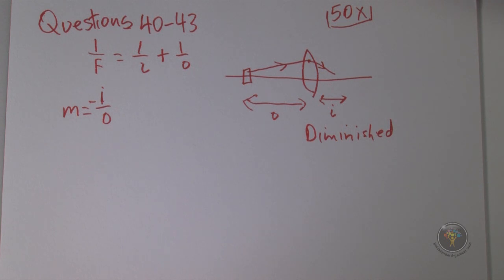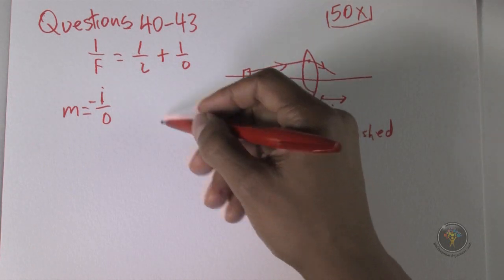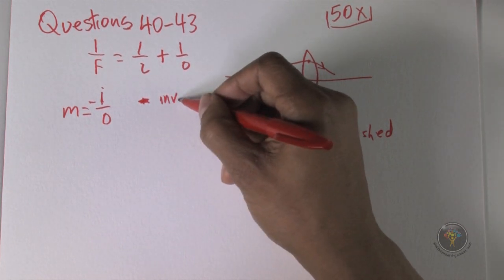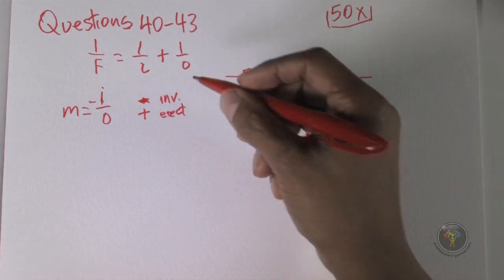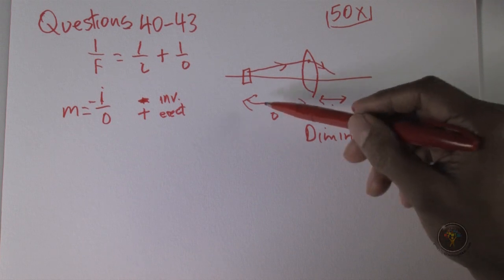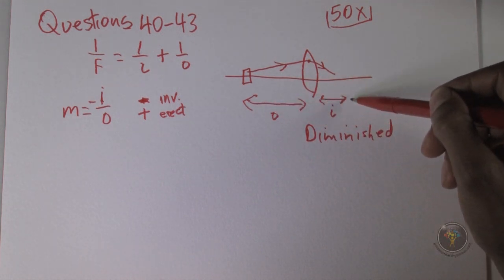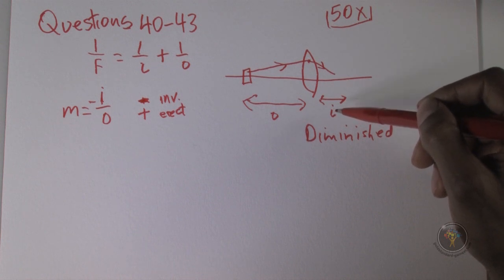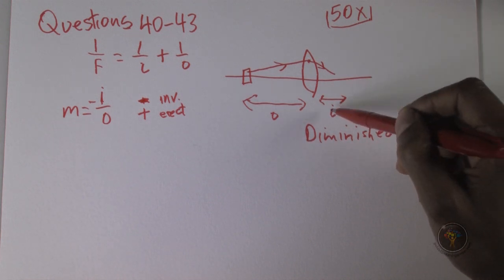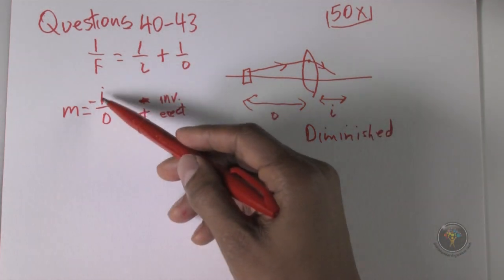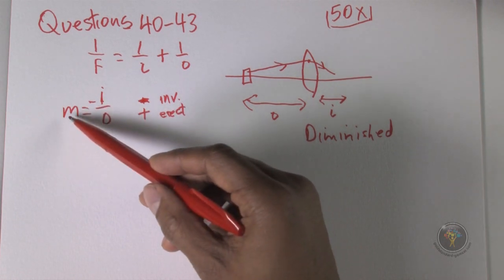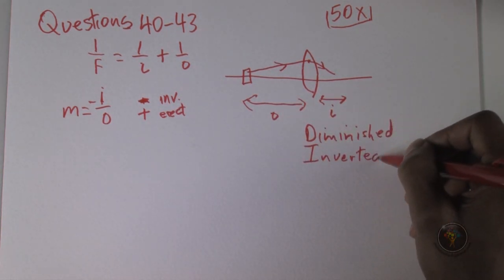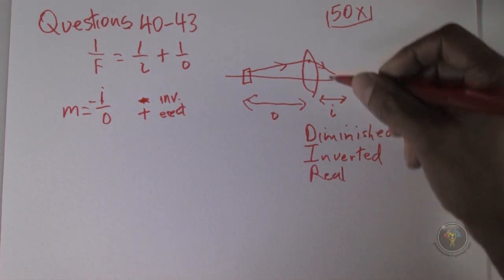The magnification equation is also useful because of sign conventions. When magnification is negative, the image is inverted; when positive, the image is erect or upright. Here, the object distance is positive, and the image distance is also positive because it's a real image — the image distance is only negative for a virtual image, which is not the case here. Because both distances are positive, the magnification is negative, meaning the image is inverted, or upside down.